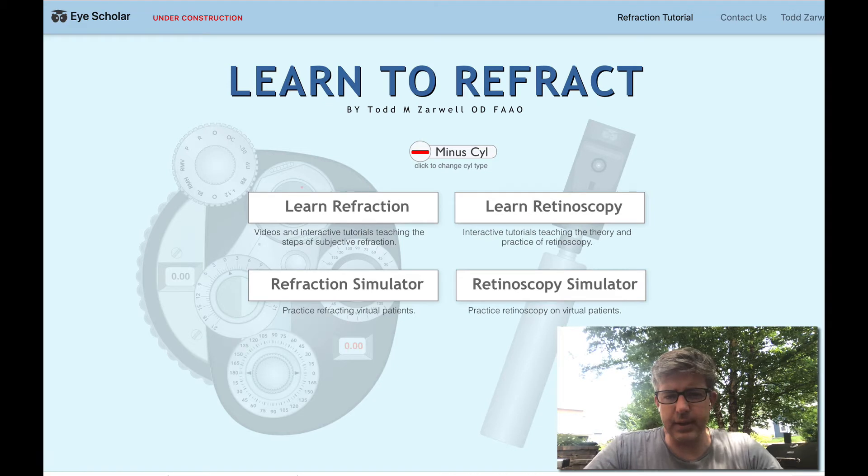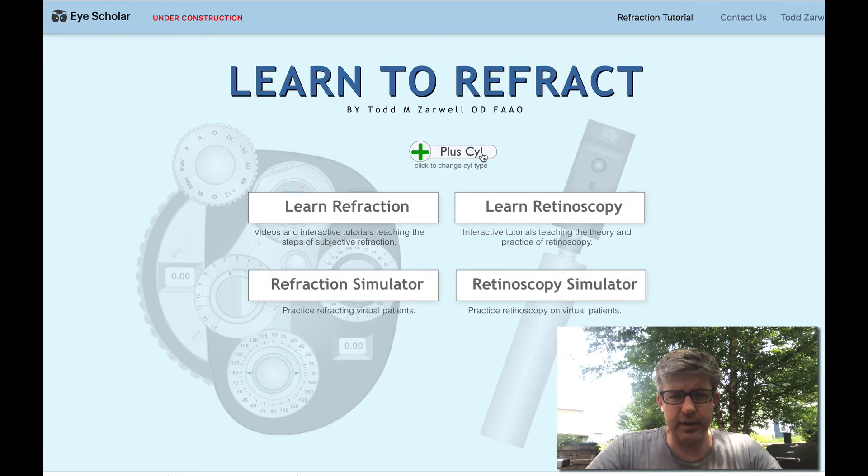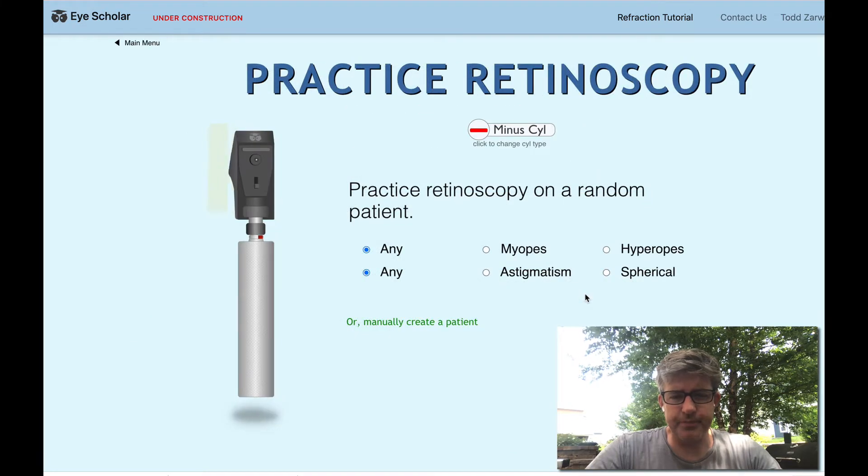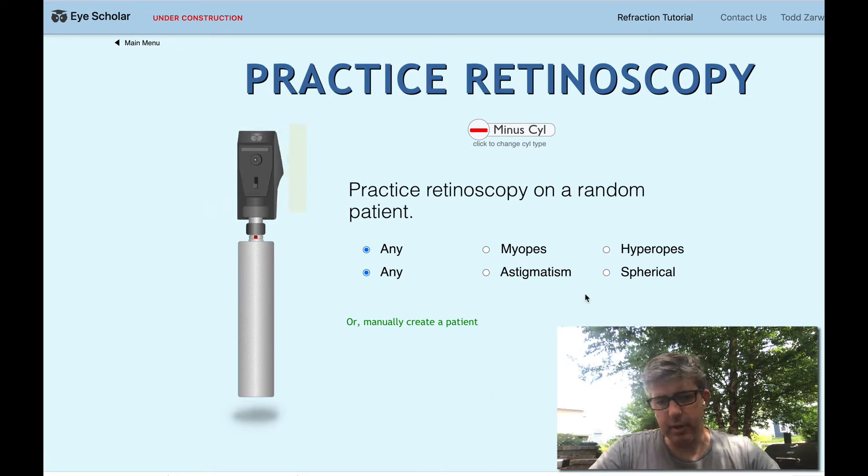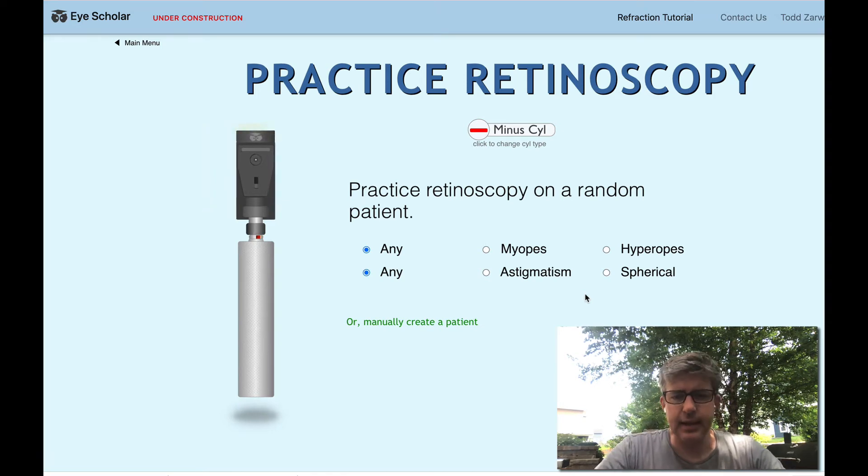Let's do a retinoscopy simulator today. I could do plus cell or minus cell. I think I'll do minus cell. We'll go to the simulator and here we can choose just a random patient or we can say if we want a myope, a hyperope, somebody with astigmatism, somebody without astigmatism, depending on if you want to learn or practice a particular thing.